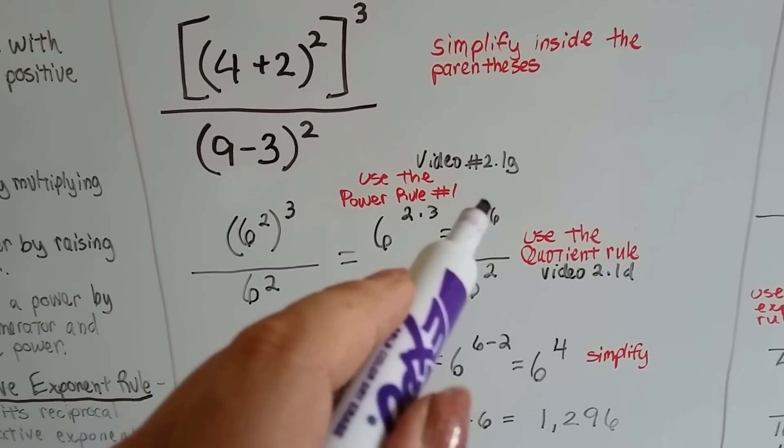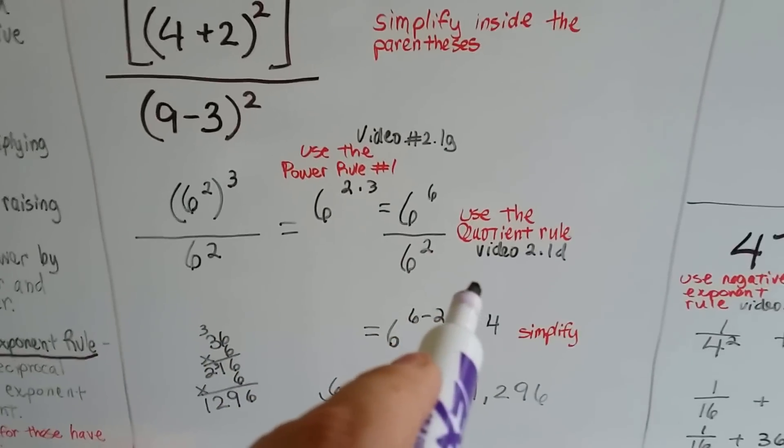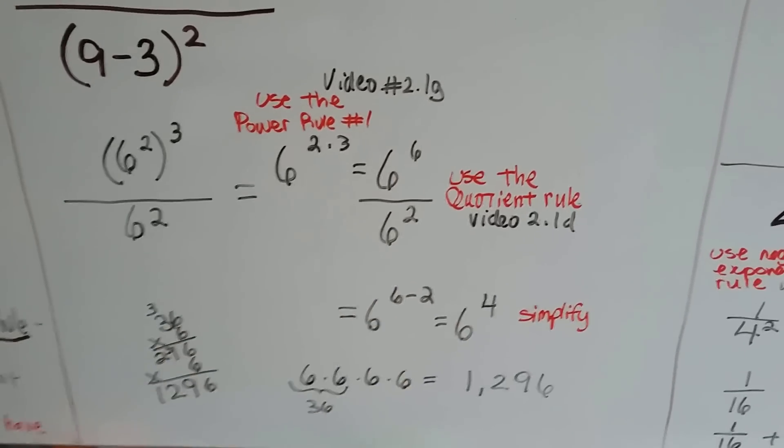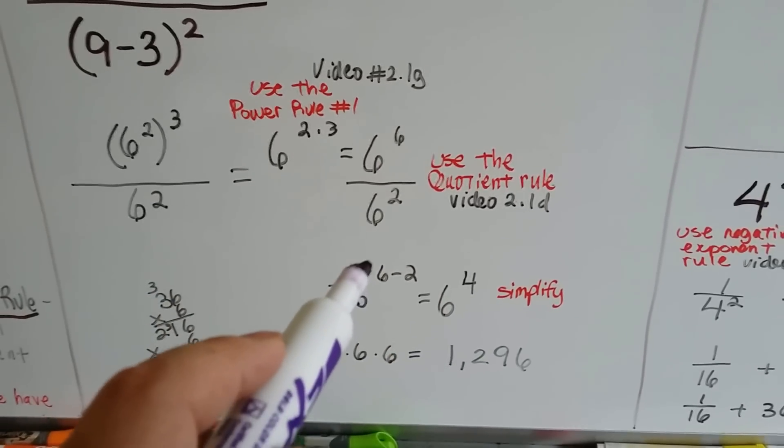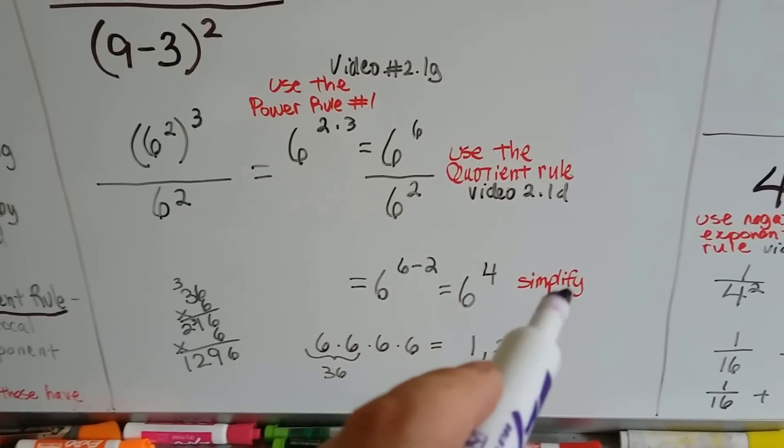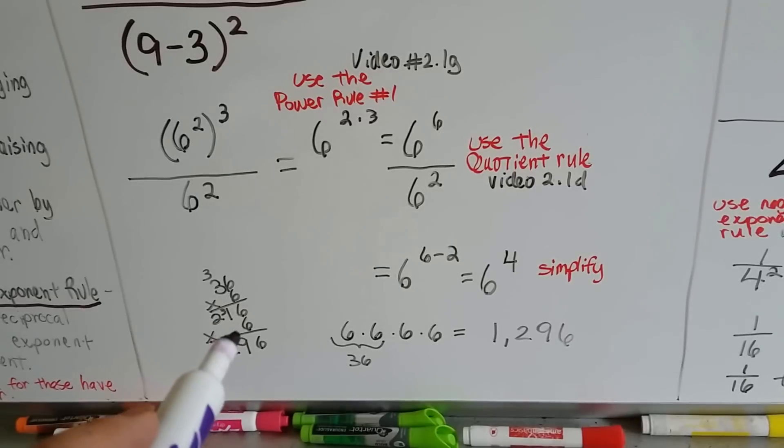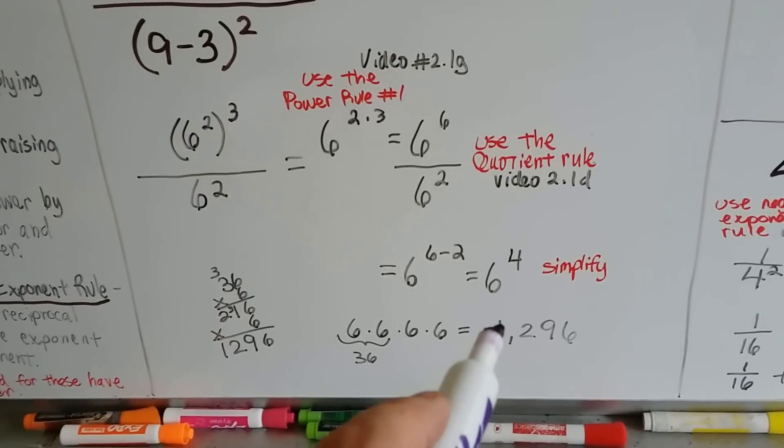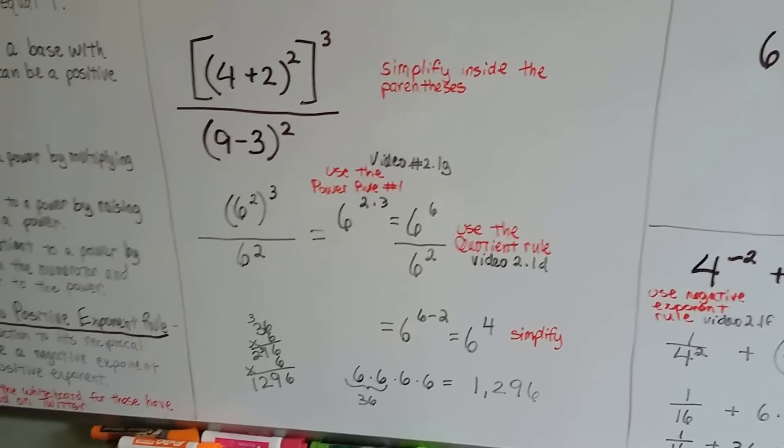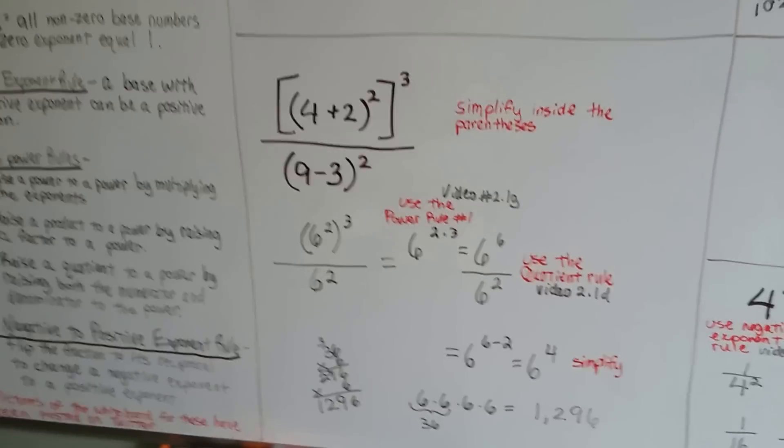So, now we've got 6 to the 6th power over 6 to the 2nd power. If you saw video number 2.1d, you know that we can use the quotient rule, and we could subtract these exponents. We've got 6 to the 6th take away 2. That's going to be 6 to the 4th power. Now, all we have to do is simplify it. 6 times 6 times 6 times 6. We do our little multiplication, and we see that it equals 1,296. Take it in little bitty steps, and you're fine. But it's really going to help if you've seen these videos and took notes.